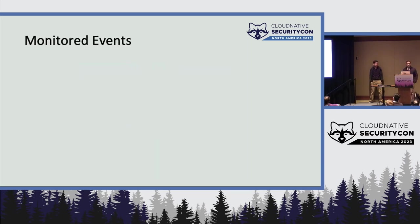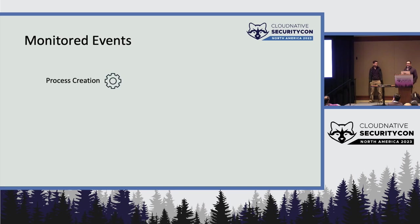Linux supports 300-plus system calls; eBPF can capture all of them, but that wouldn't be very efficient. So we collect all the relevant syscall events that are valuable for threat detection. Some of the main ones include process creation and execution events. These events allow us to provide process-level details, identify suspicious process executions, and also profile or track behavior of various executables, pods, and containers.